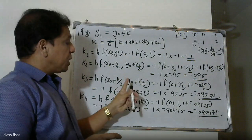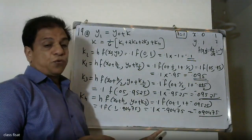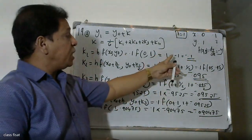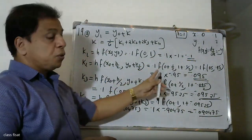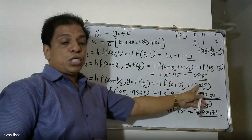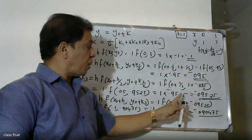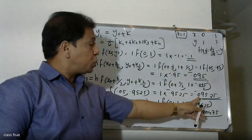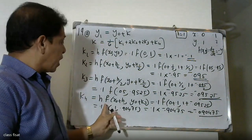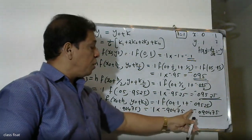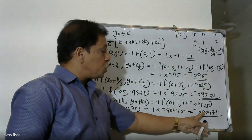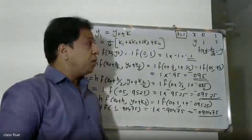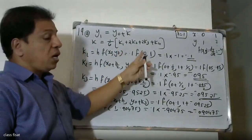To summarize the computed k values: k1 = -0.1, k2 = -0.095, k3 = -0.09525, and k4 = -0.090475. We will now substitute these into the RK4 formula.